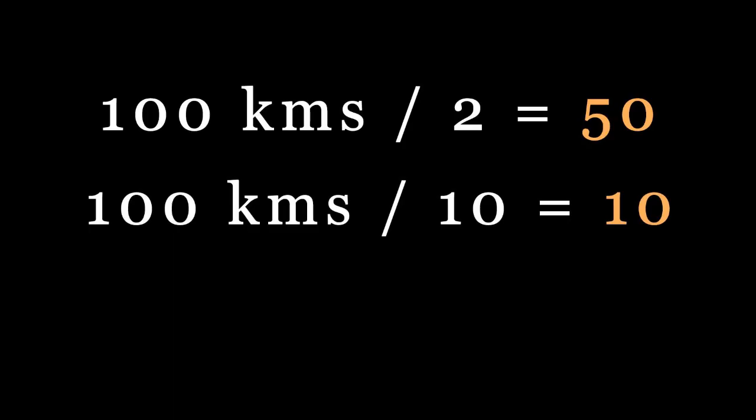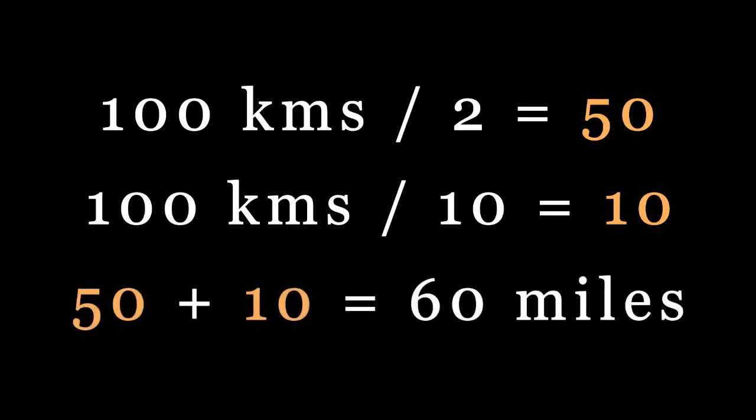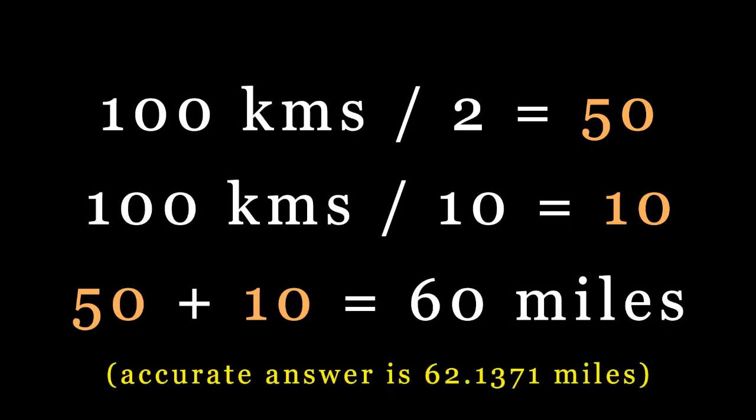Dividing by 10 is easy. You just move the decimal point over one position. Add up 50 and 10, and you get 60 miles. Now the accurate answer is 62.137 miles, so you're off by a little bit, but for a rough estimate, it's pretty close.